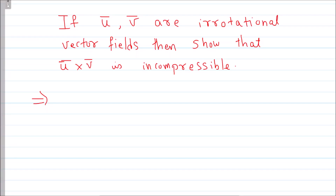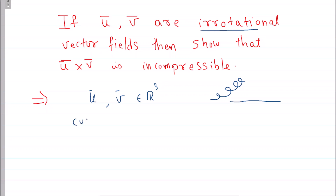This question asks about two vectors u and v in R3. If you have two irrotational vector fields — irrotational means the vectors are not rotating, they are flowing straight through a medium — then mathematically, irrotational means the curl of these two vectors is zero: curl of u = 0 and curl of v = 0.